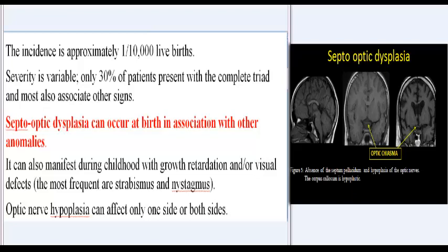Septo-optic dysplasia can occur at birth in association with other anomalies. It can also manifest during childhood with growth retardation and/or visual defects, the most frequent being strabismus and nystagmus.